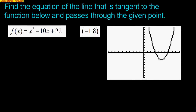We're going to find the equation of the line tangent to f(x) = x² - 10x + 22 that passes through the point (-1, 8). On the graph, (-1, 8) is not on the function — it's off to the side — so we need to find a very specific line passing through that point that is tangent to this function.